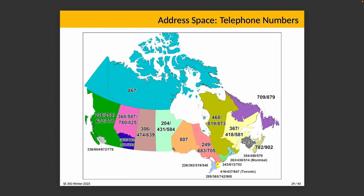Hypothetically, if there's still a district where 10-digit dialing is not mandatory, dialing 555-1234 will implicitly add the area code at the front and connect you to that number in your local area code.